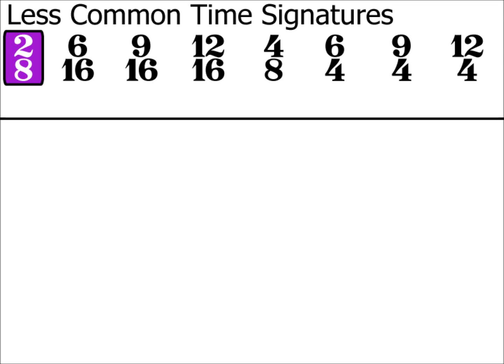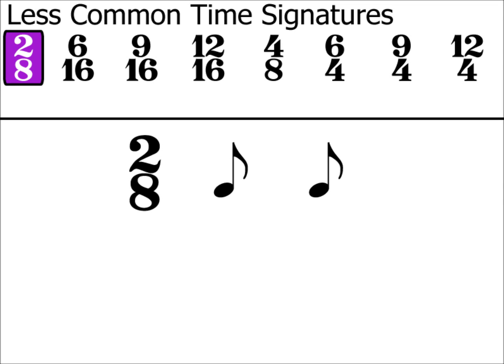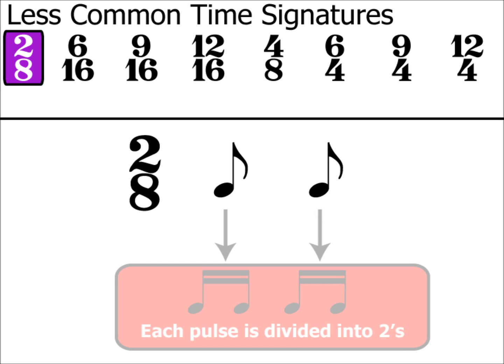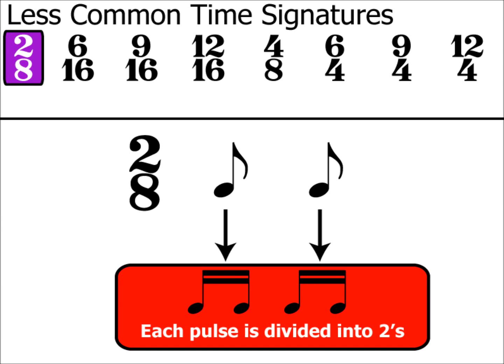By now you should be familiar that an 8 at the bottom of the time signature means the beats are quavers. So 2/8 means two quaver beats per bar. Each quaver can be split into two equal parts — two semiquavers. So we know that this is a simple time signature.